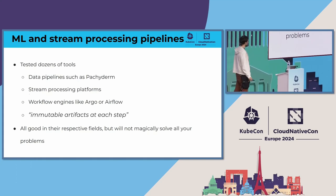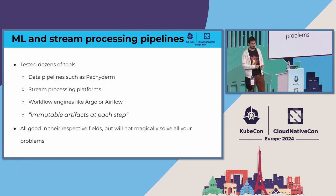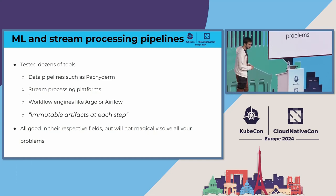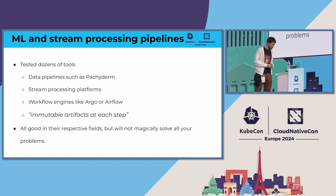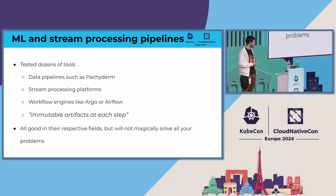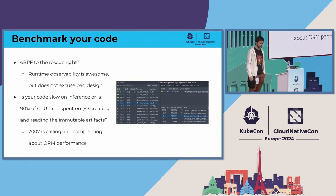I used a bunch of different pipeline tools — Pachyderm, Spark, Airflow, and others I don't remember now. One thing most of them have in common when passing data around is immutable artifacts at the end of each step. The idea is that when there's a problem you go back to each step and redo it — which is nice, except it may not fit your purpose, and the premise that it magically solves function chaining is not necessarily accurate.